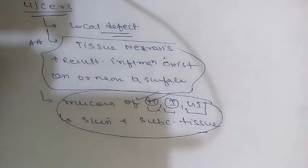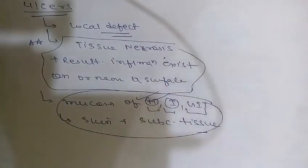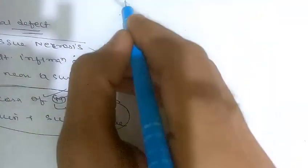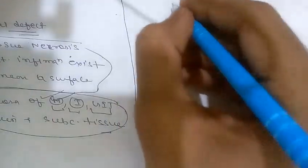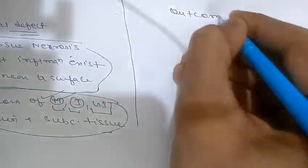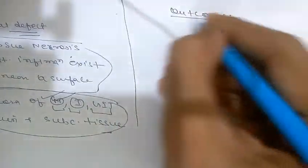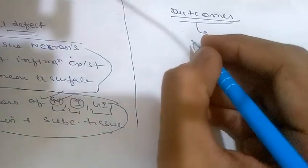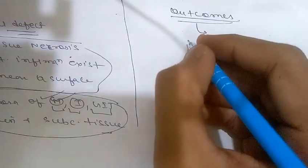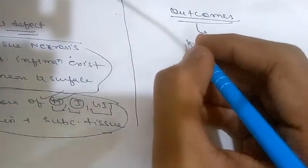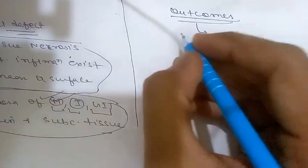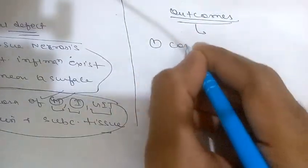These are the basic morphological changes found in acute inflammation. After completing the morphological changes, we will now discuss the outcomes of acute inflammation. Inflammatory reactions typically have one of three main outcomes.